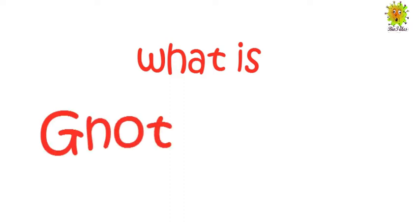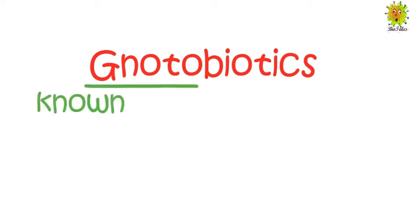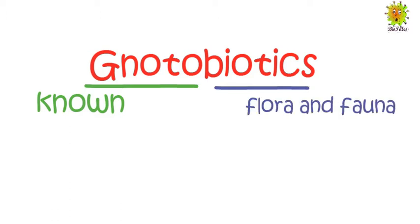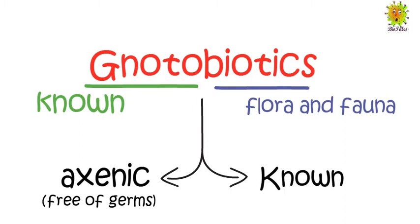Welcome to our new video related to the human defense system. Have you ever heard about the word 'notobiotic'? It is a Greek term where 'notus' means known and 'biota' means flora and fauna of any region. The term notobiotic refers to any environment or animal which is either axenic — that means free of germs — or in which all types of microorganisms are known.